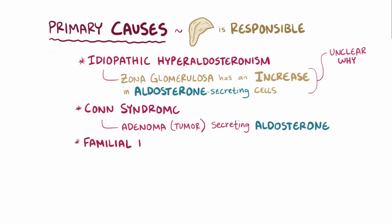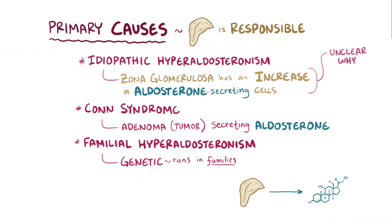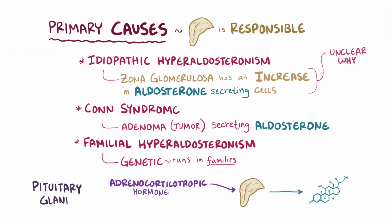A third cause is familial hyperaldosteronism, which is a genetic condition that runs in families, where the zona glomerulosa cells inappropriately make aldosterone in response to adrenocorticotropic hormone, which is secreted by the pituitary gland, in addition to responding to renin as normal.